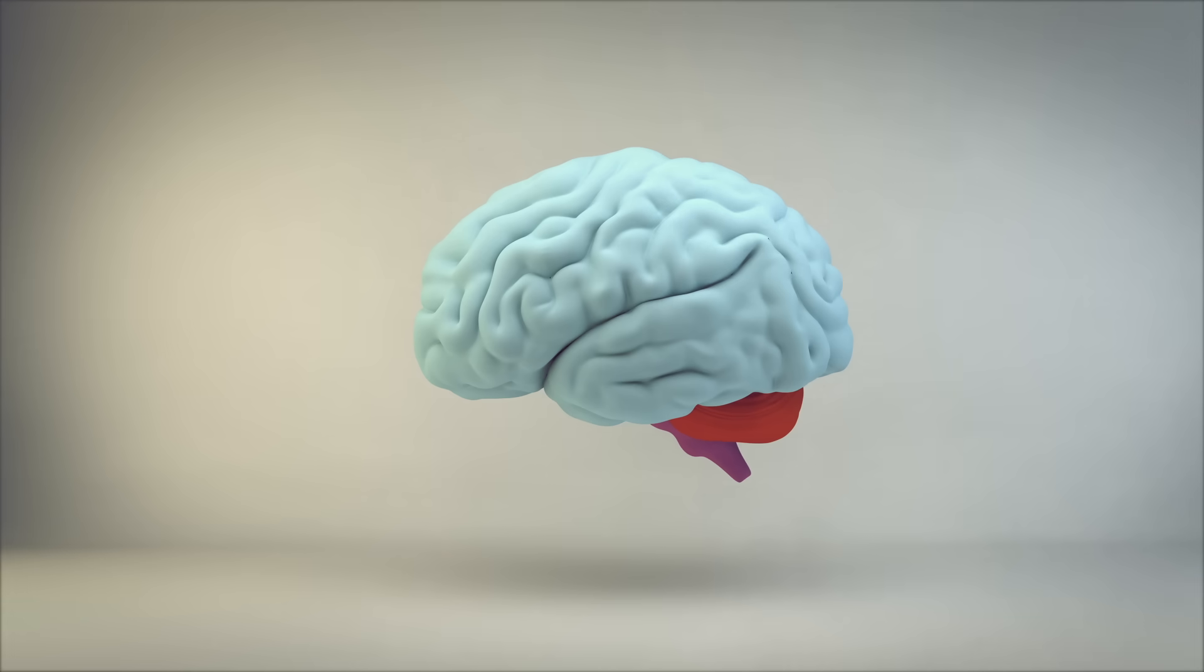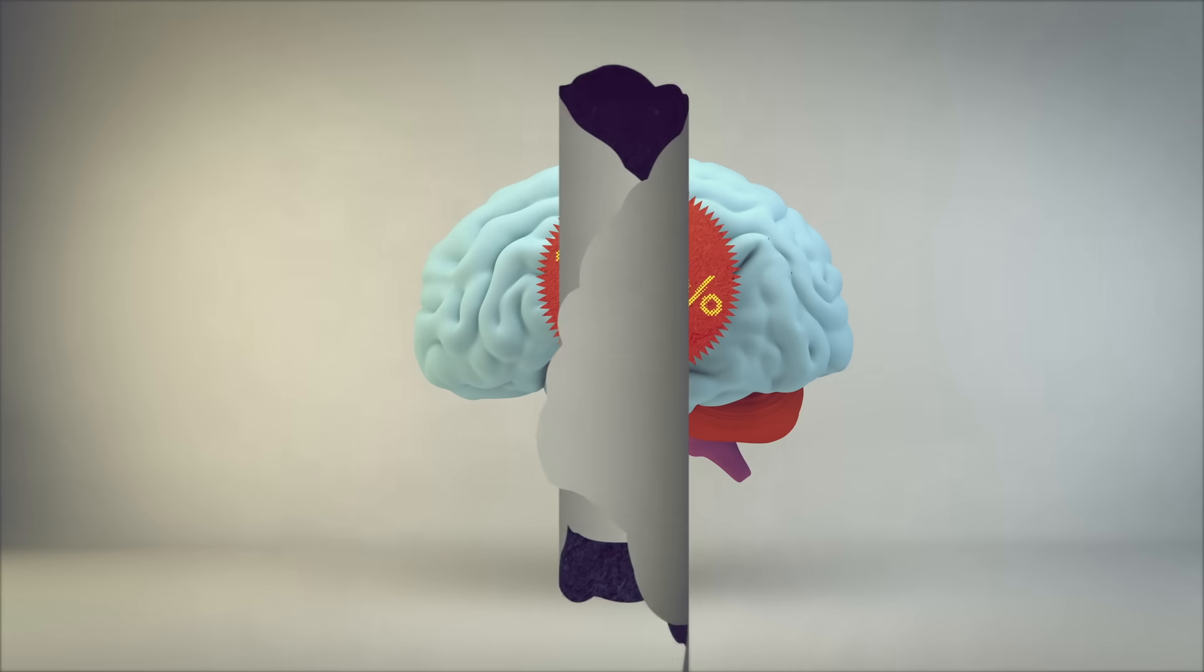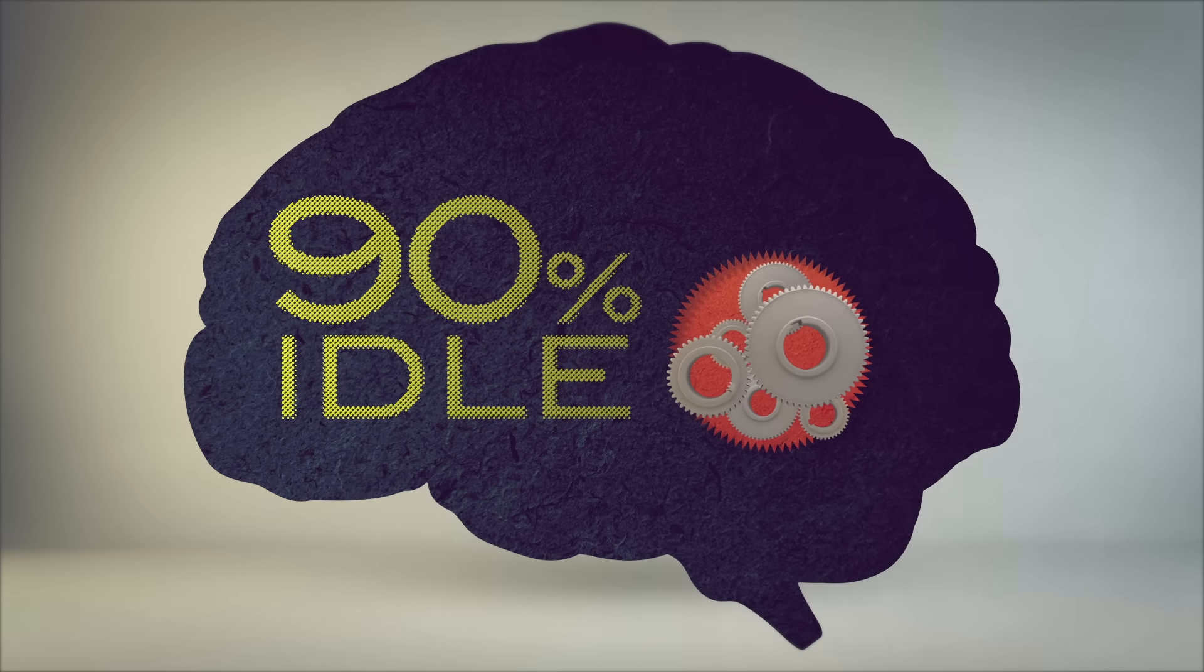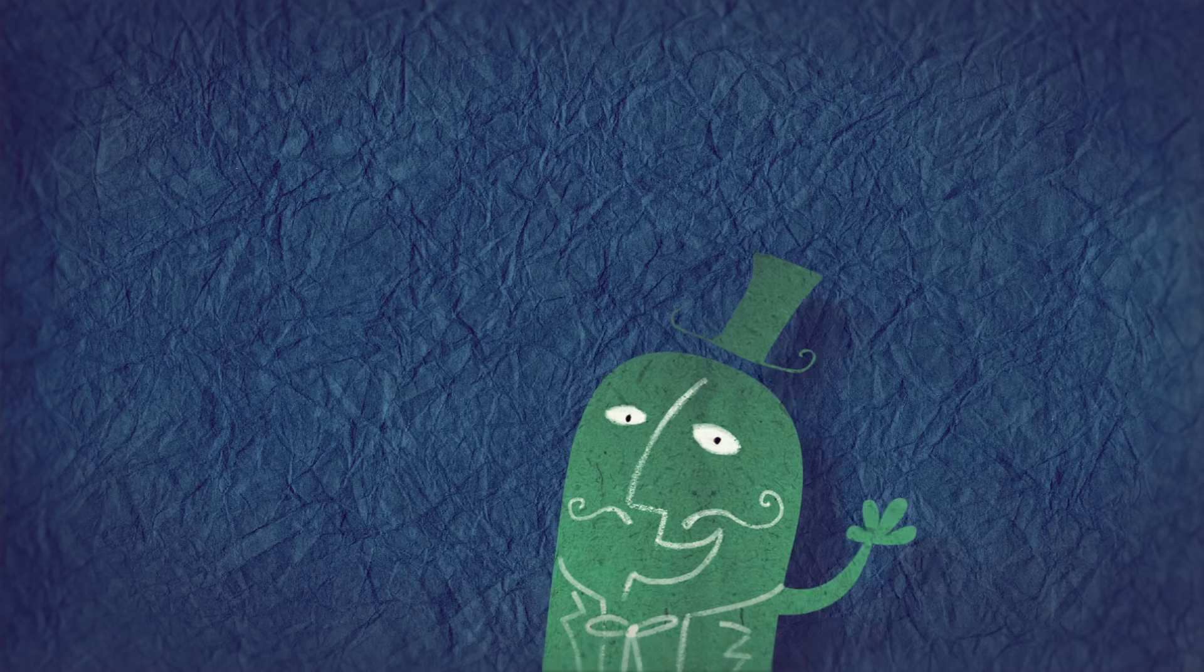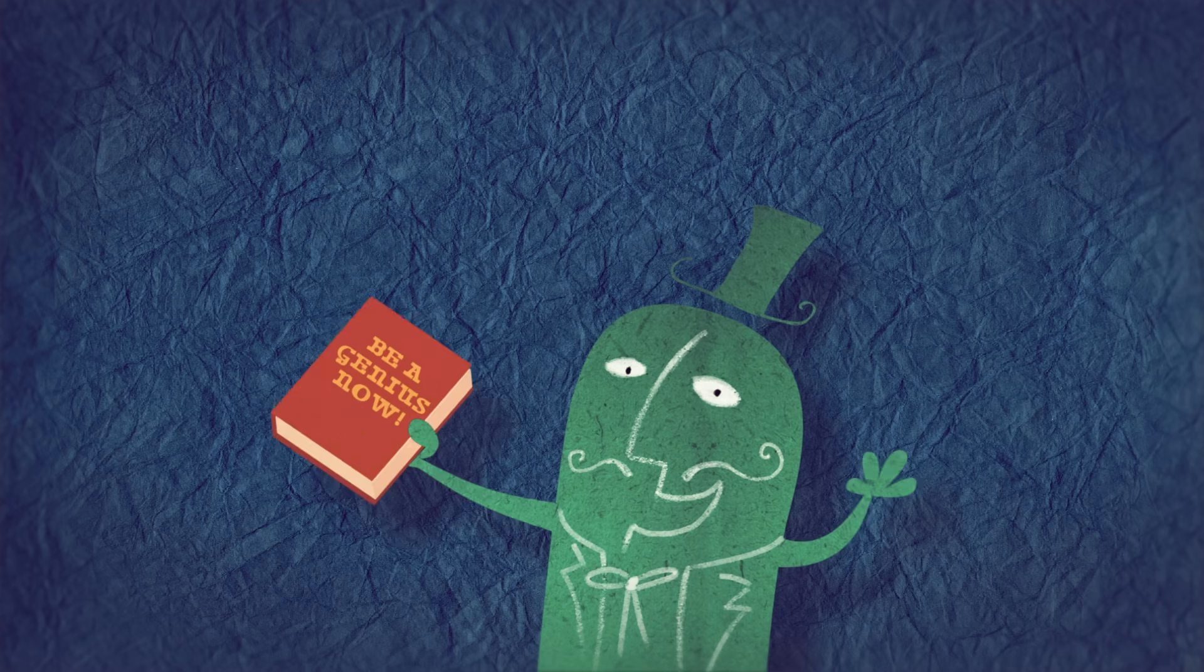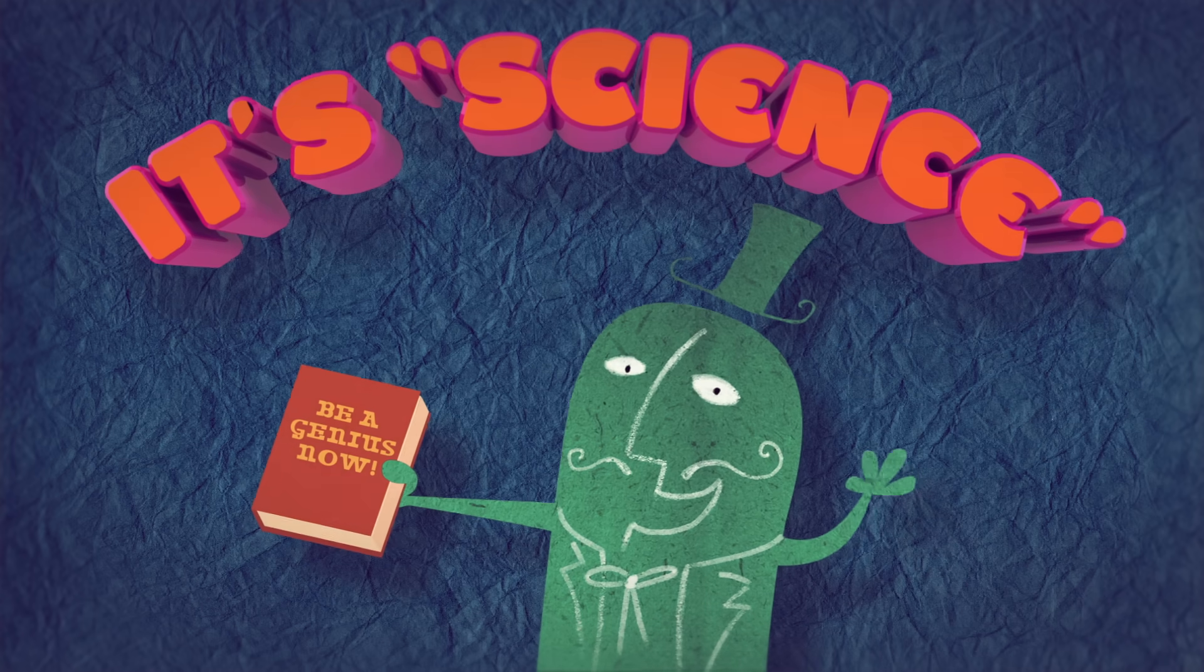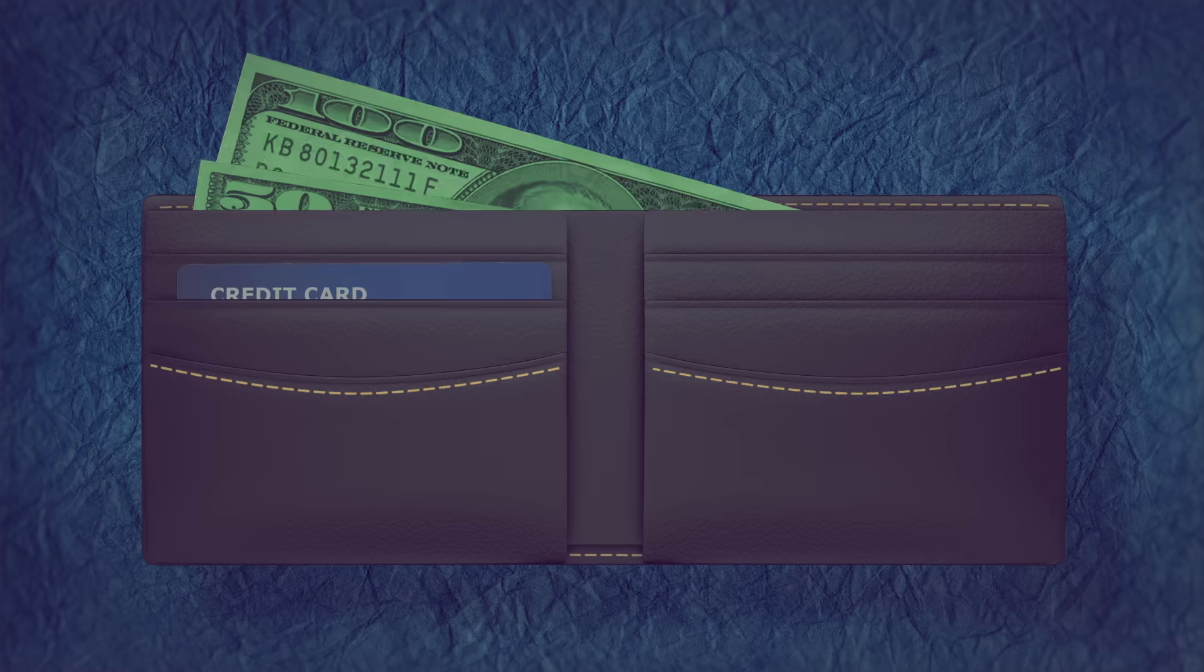An enduring myth says we use only 10% of our brain, the other 90% standing idly by for spare capacity. Hucksters promise to unlock that hidden potential with methods based on neuroscience, but all they really unlock is your wallet.